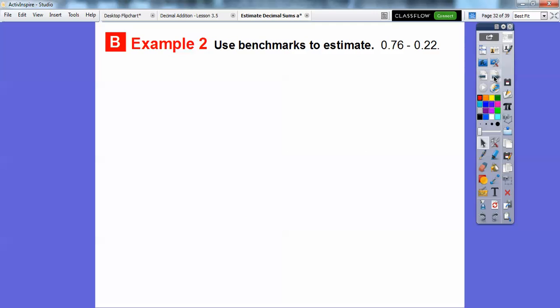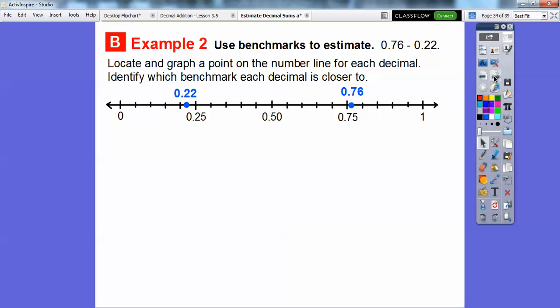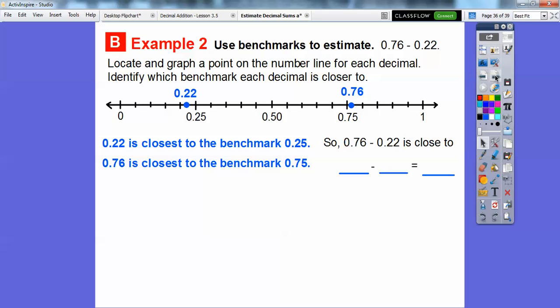Use the same benchmarks to estimate 76 hundredths minus 22 hundredths. Let's put them on the number line. This one's closest to 0.25, and this one's closest to 0.75. When we subtract, we're going to get 0.75 minus 0.25, which is 0.50.